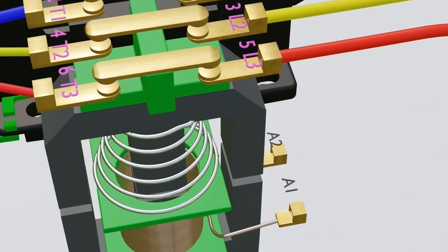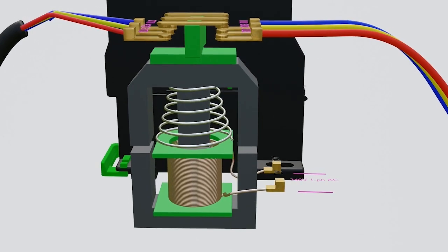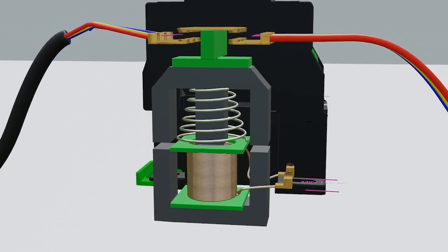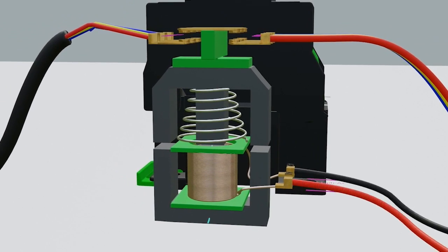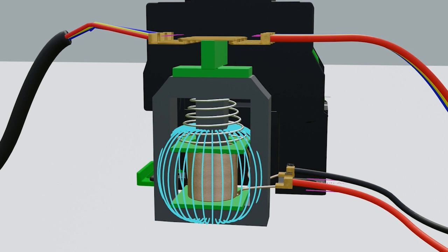Friends, suppose the controlling of this contactor is 240V AC. That means if we give this controlling supply between A1 and A2 terminal, then this coil will get magnetized. When the coil magnetizes, it will attract this moving plunger like this, and due to that, the open contact will get closed.